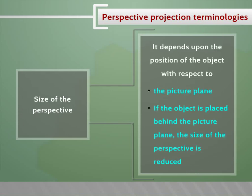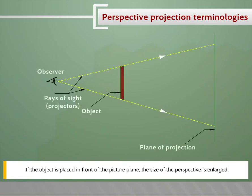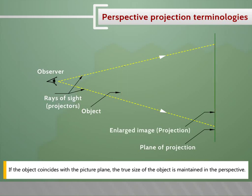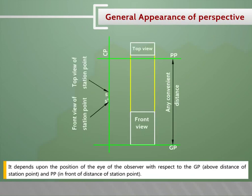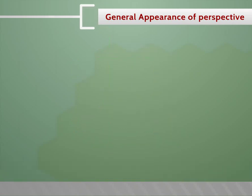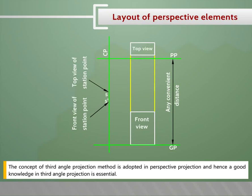The size of the perspective depends upon the position of the object with respect to the picture plane. If the object is placed behind the picture plane, the size is reduced. If in front, the size is enlarged. If it coincides with the picture plane, the true size is maintained. The general appearance of perspective depends upon the position of the eye of the observer above the ground plane and in front of the picture plane. The concept of third angle projection is adopted in perspective projection layout.